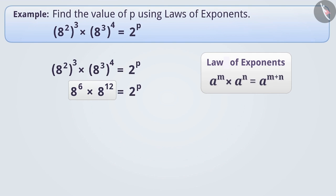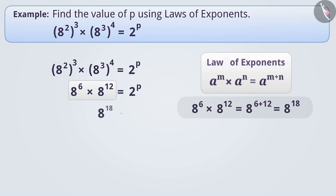Using this law, we can write 8 to the power of 6 multiplied by 8 to the power of 12 as 8 to the power of 6 plus 12, which equals 8 to the power of 18. Now we see that the base is 8 on the left side and 2 on the right side.